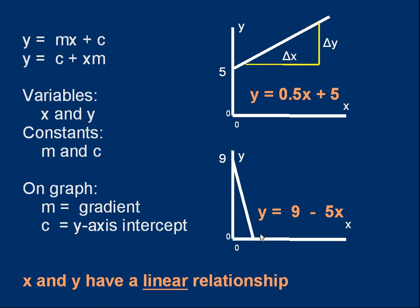Because these graphs are straight lines, we say that x and y have a linear relationship. We could also say y is linearly dependent on x.